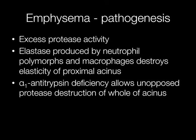What actually causes emphysema to develop? It is thought to be due to excess protease activity. Proteases include elastase produced by neutrophil polymorphs and macrophages, which destroy the elasticity of the acinus. Exposure to cigarette smoke and coal dust results in excess numbers of neutrophil polymorphs and macrophages in and around the respiratory bronchioles, producing proteases that destroy the centre of the acinus. The protease activity is counterbalanced by alpha-1 antitrypsin, and alpha-1 antitrypsin deficiency results in excess protease activity and panacinar emphysema.